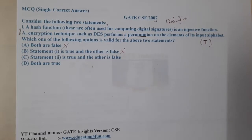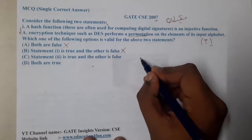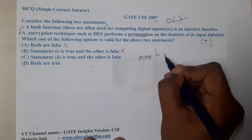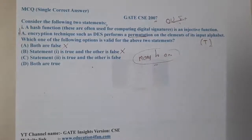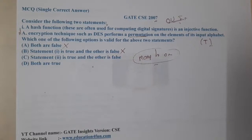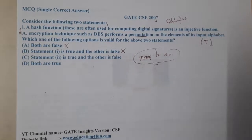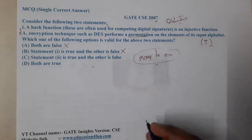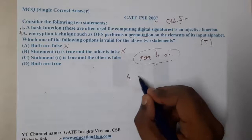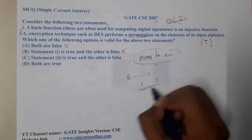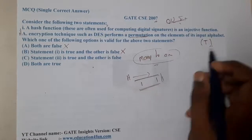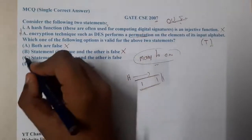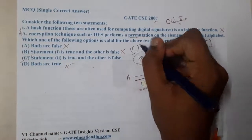Now, what does statement one say? A hash function used to compute digital signatures is an injective function. Injective means one-to-one — we will discuss this more in discrete mathematics. Whenever we do hashing, we always want one-to-one mapping. However, hashing does not always guarantee this, so statement one could be wrong. With that conclusion, C is the correct answer.